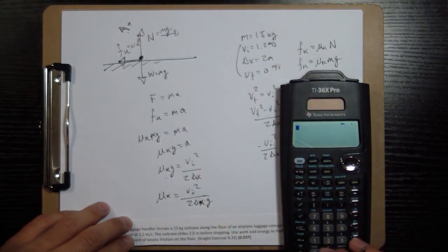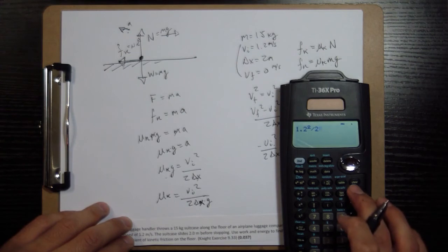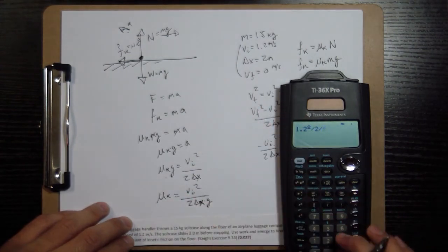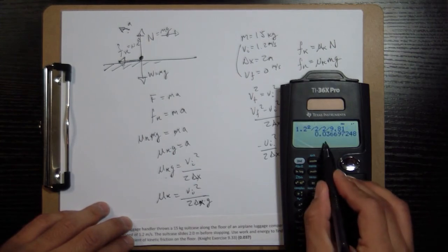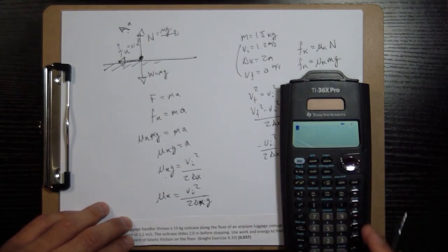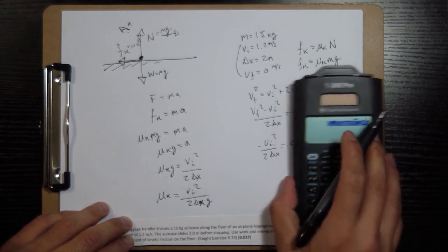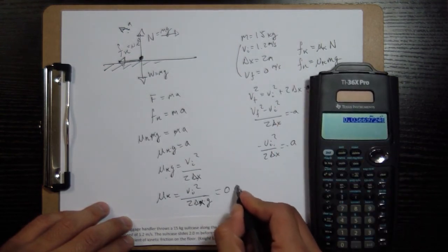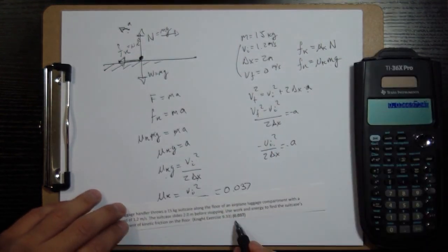So initial velocity is 1.2. Square that. Divide that by 2. Divide that by delta x, which is also 2. And divide that by 9.81, 0.037. That's what we have here for the problem.